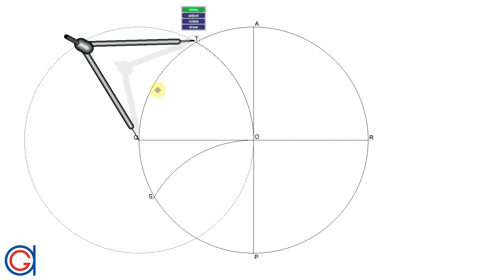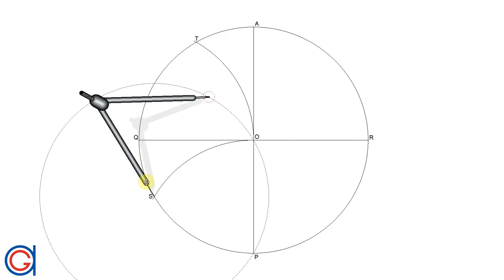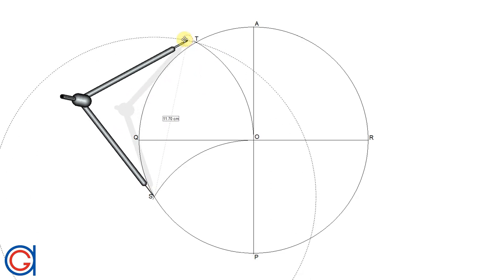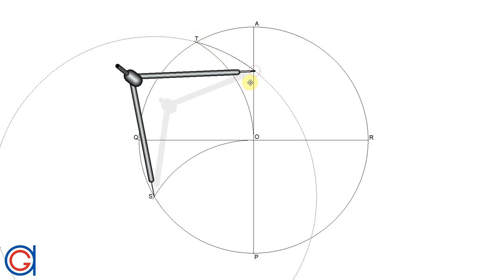So to continue, setting our compass on point S and with a new radius ST, we scribe an arc to the right until it cuts the vertical diameter at a new point which we will call U, as can be seen here.